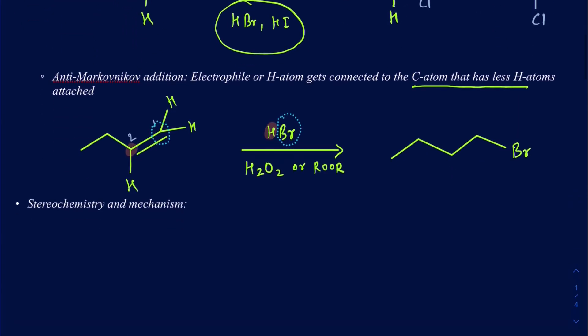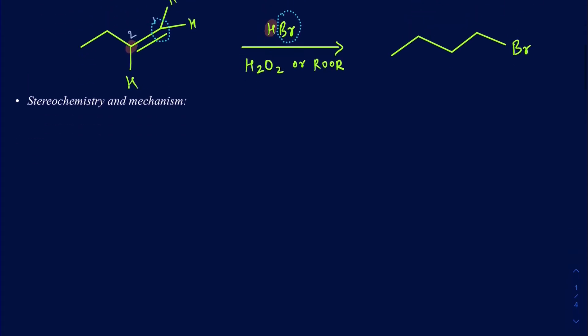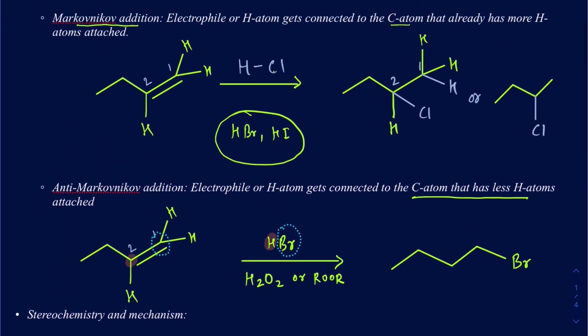Your anti-Markovnikov rule is going to work with HBr only. When we talk about the stereochemistry and the mechanism, those go together. I'm only going to be talking about Markovnikov addition here — the anti-Markovnikov mechanism is different and involves radical reactions, so that's for a different day.